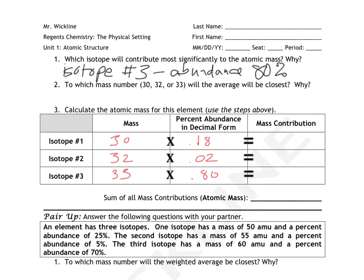And then the second question is, to which mass number, 30, 32, or 33, will the average be closest and why? So generally, whichever isotope has the greatest abundance, in this case isotope three, then that's going to be the one that contributes the most and therefore the average will be closest to that number. So my guess is that the average will be closest to 33. This is not always going to be true based on just math, but it's usually going to be true.